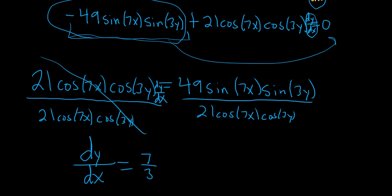And then look at this, sine over cosine, that's tangent. So we get tangent of 7x. What a fun answer. And we get tangent of 3y. That would be the final answer. That would be dy/dx.